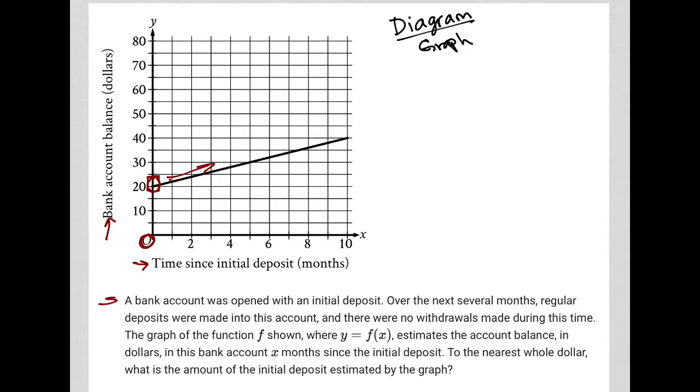So the question here says a bank account was opened with an initial deposit. Over the next several months, regular deposits were made into this account and there were no withdrawals made during this time. The graph of the function f shown where y equals f of x estimates the account balance in dollars in this bank account x months since the initial deposit. To the nearest whole dollar, what is the amount of the initial deposit estimated by the graph?